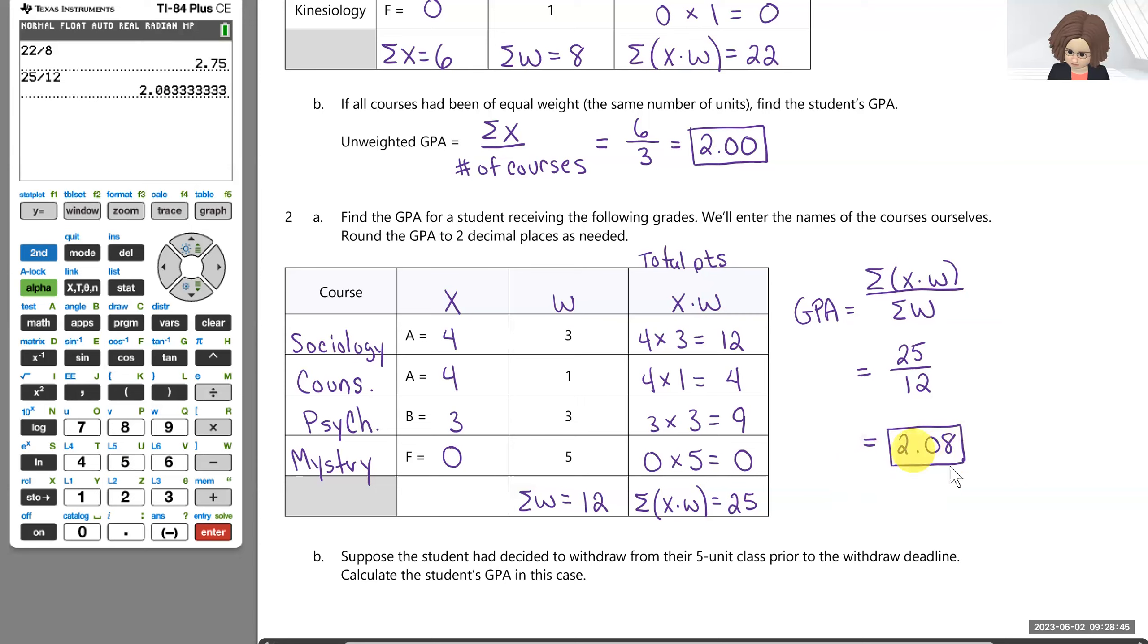So in terms of a letter grade, two grade points, that's like a C. So this is just a little above a C average, even though the student got an A, an A, and a B. So that's seeming a little bit low for their average, but it's because that five unit F is really kind of bringing down that GPA.